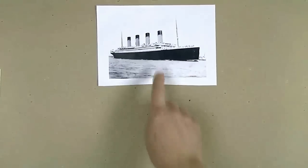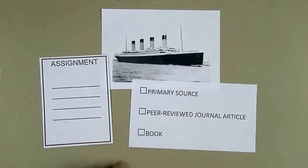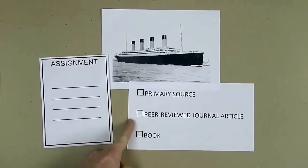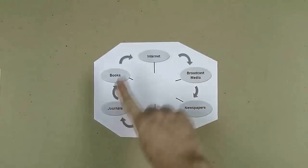The topic is the sinking of the ocean liner Titanic in 1912. The assignment requires these information sources: a primary source, a peer reviewed journal article, and a book. You need to go to the information cycle for three specific points of view.